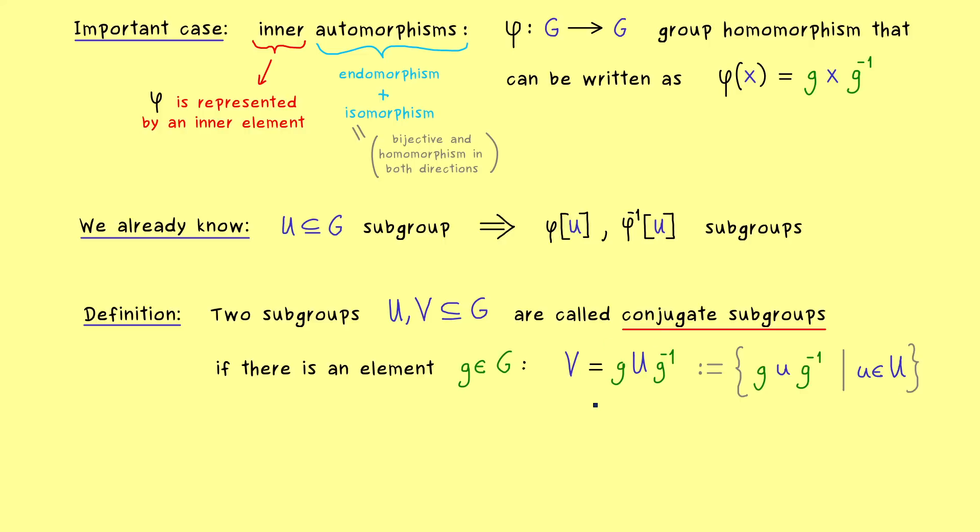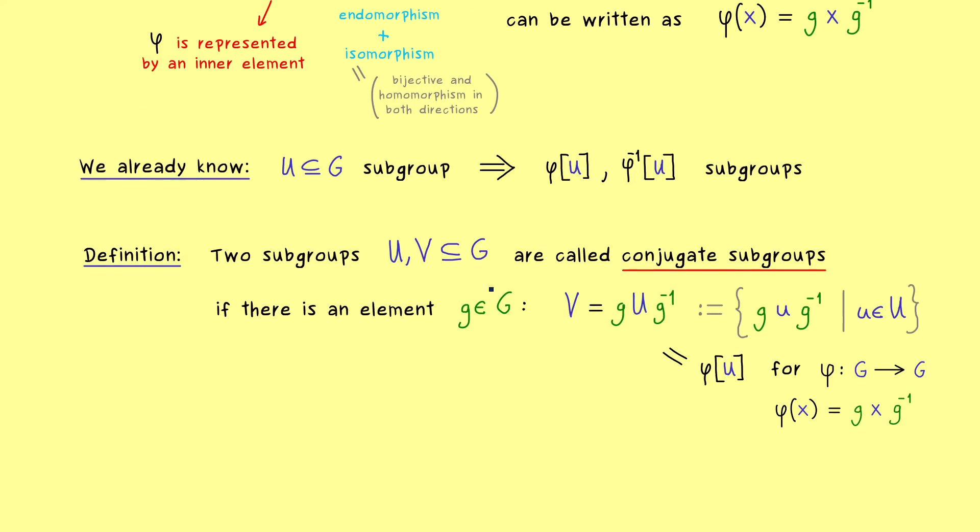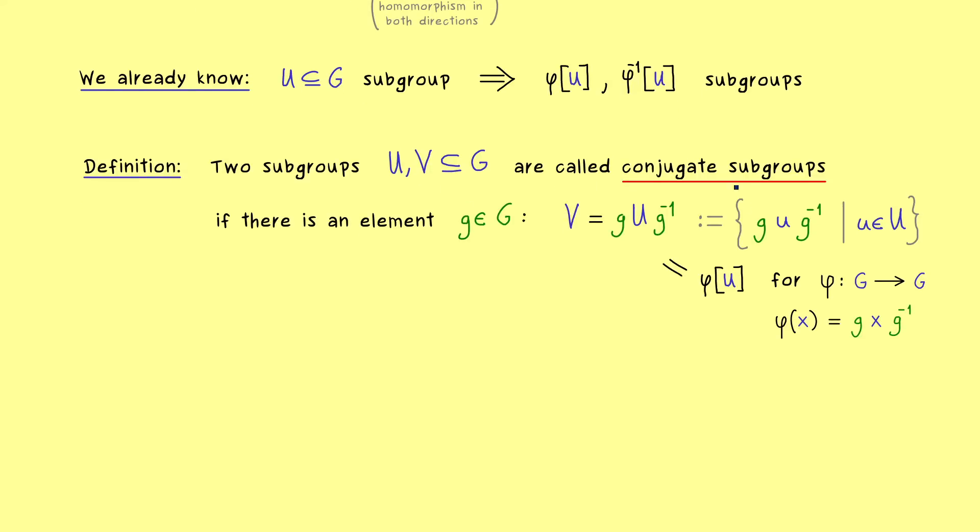And there you should also recognize that this is exactly the image of U under φ if we define φ in that way. So regarding to an inner automorphism the one subgroup is the image of the other. Obviously you can also change the order by using the inverse of g. Hence it's a symmetric relation and we can just say these are conjugate subgroups to each other.